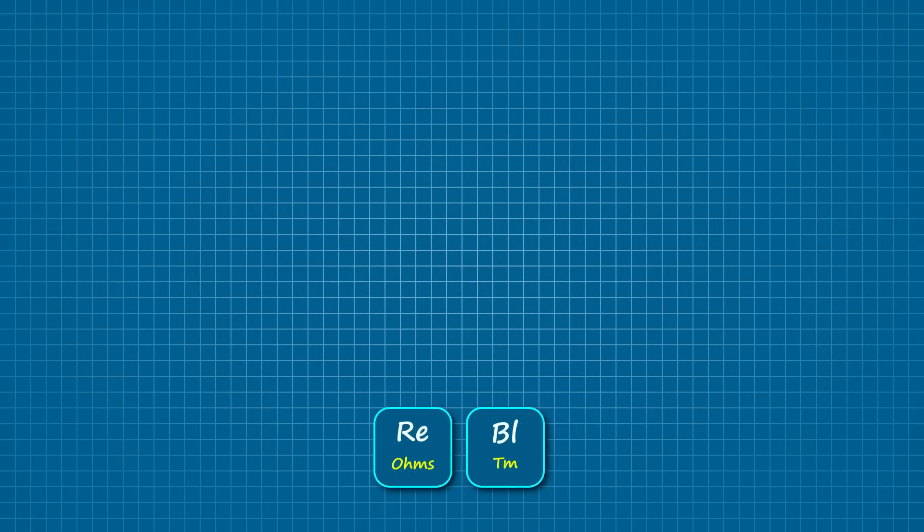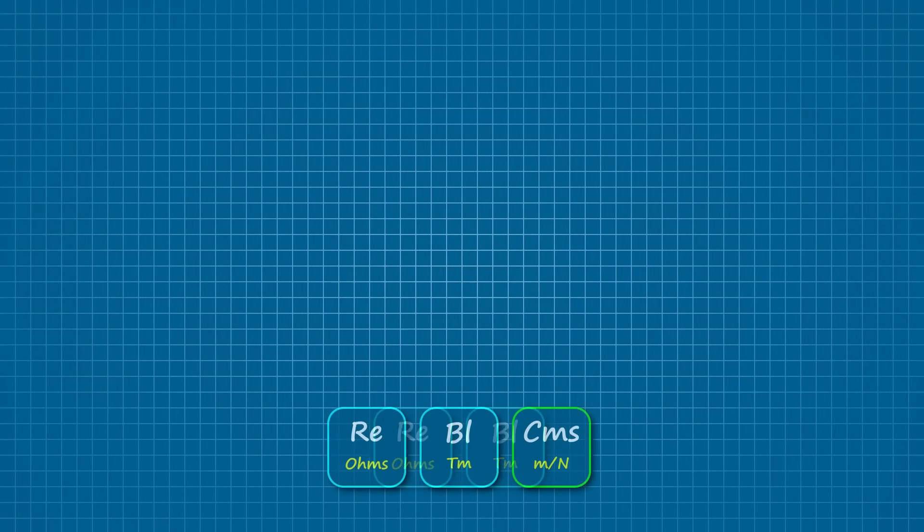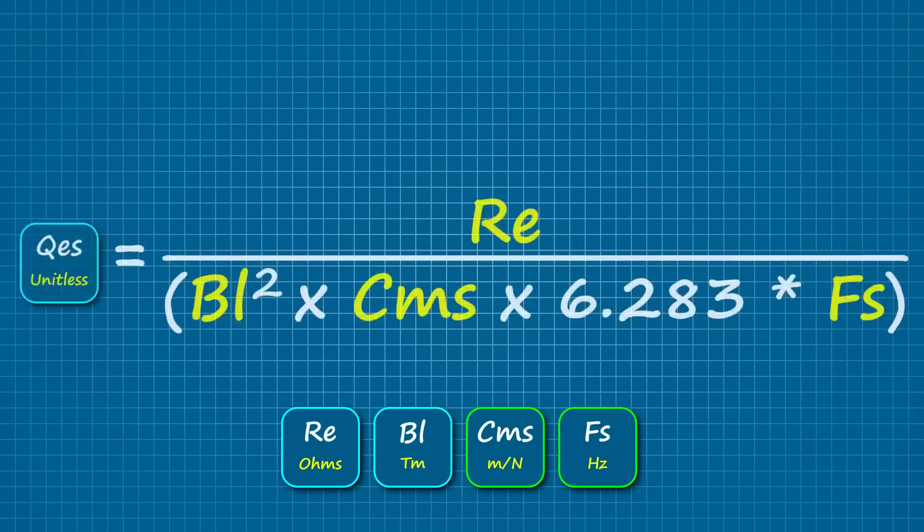There is a way to derive the essential Q values from other parameters. As long as you know the driver's DC resistance, the BL product, the suspension compliance, and the free air resonance, you can use this formula to solve for the electrical Q. Just be sure to enter the compliance in meters per newton, otherwise you'll be off by a decimal point or two. I'll post all these formulas down below.